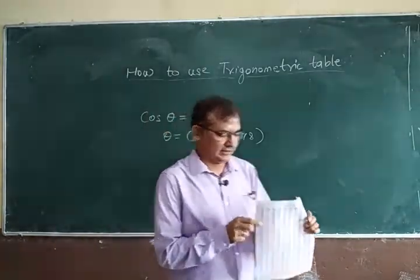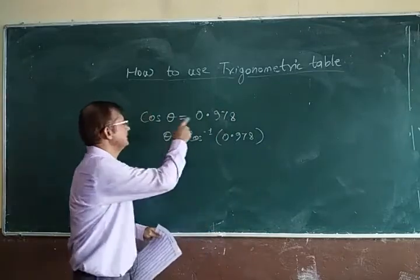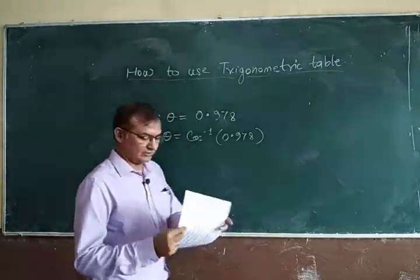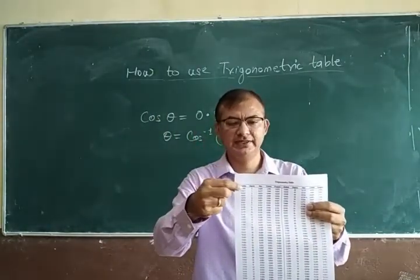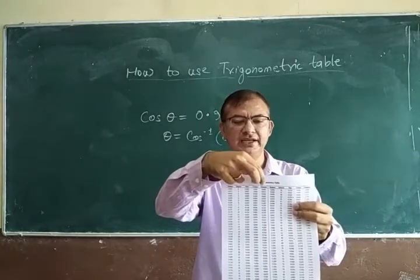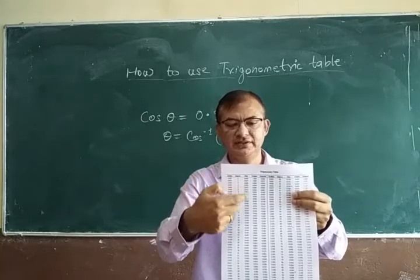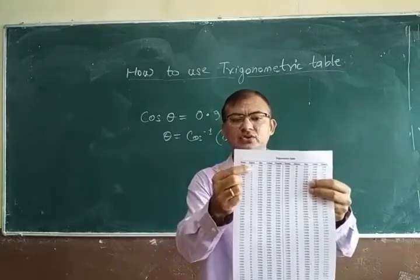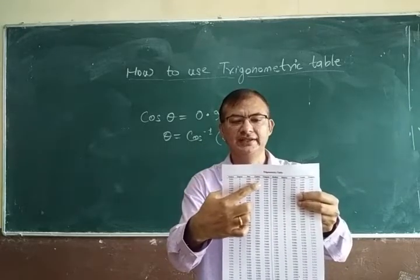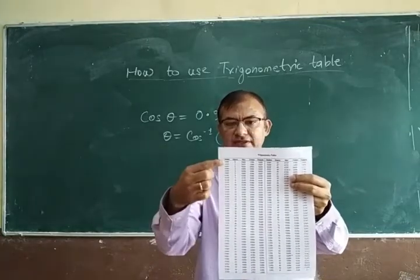So what you will find in this trigonometric table is that angles can be measured in two units. The first column is for radians and the second is for degrees. So if cos theta equals 0.978, you look through the cosine column. The table gives you all the values of degrees from 0 to 90 and radians from 0 to pi by 2 radians.